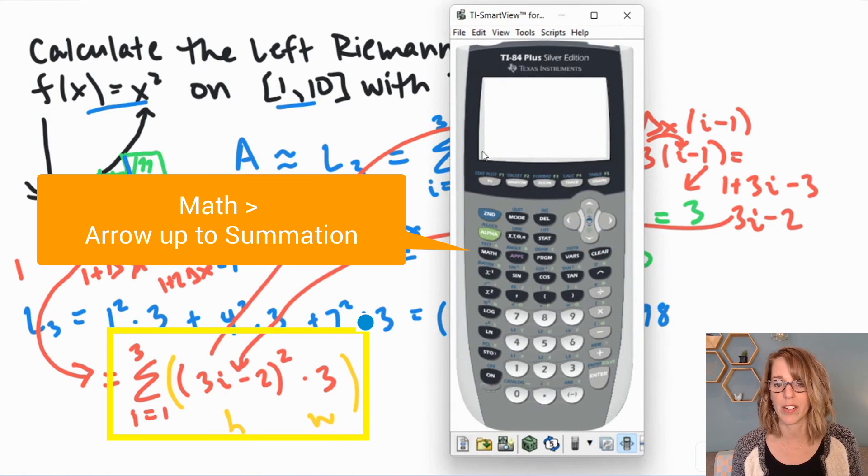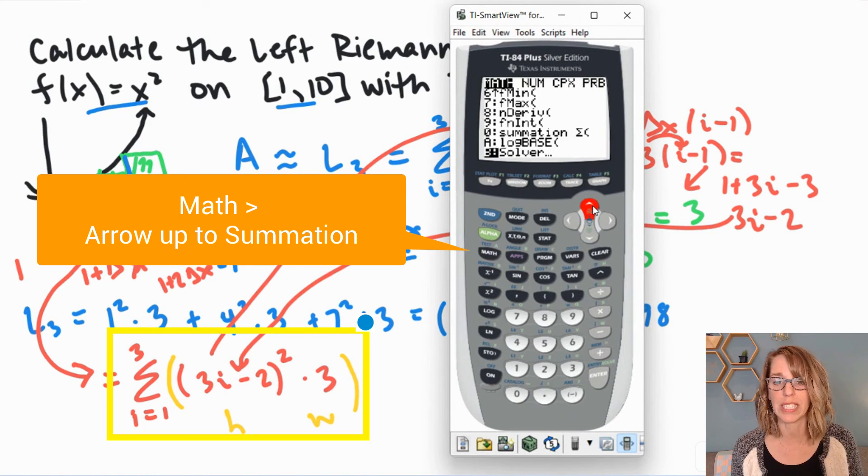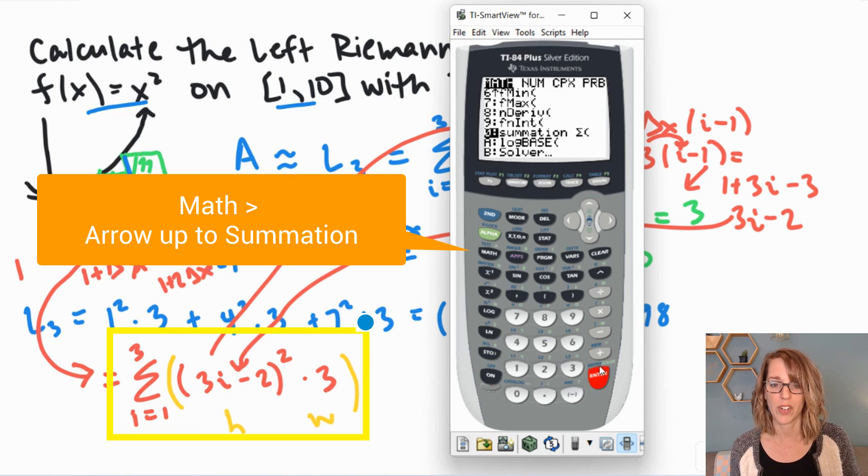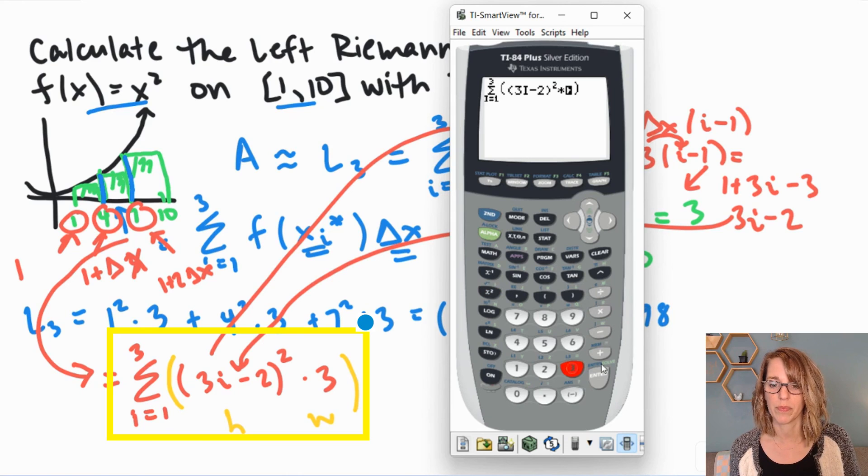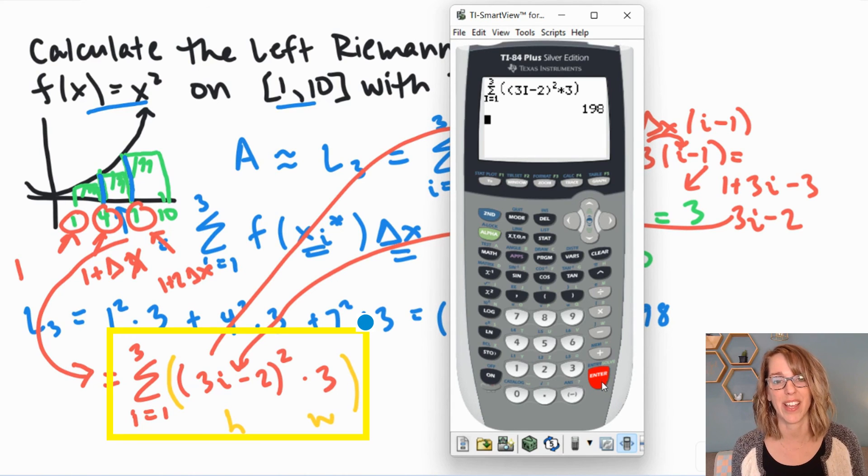Let's grab the calculator and enter it in. I'm going to go to my math menu and then summation. Arrow up. It's just a little bit quicker. And then hit enter. So alpha x squared to get to the i. i equals 1 arrow over to 3. Arrow to the right. Another set of parentheses. And now I want 3i minus 2. So 3 alpha x squared for 3i minus 2. Close that parenthesis. I want that squared times 3. I hit enter and I get the same 198 that I got before.